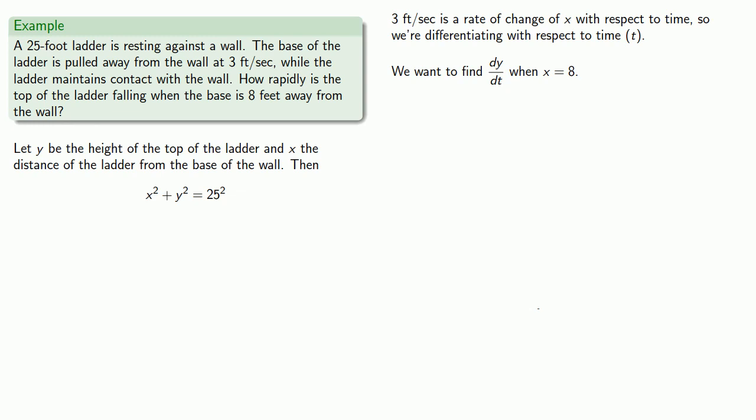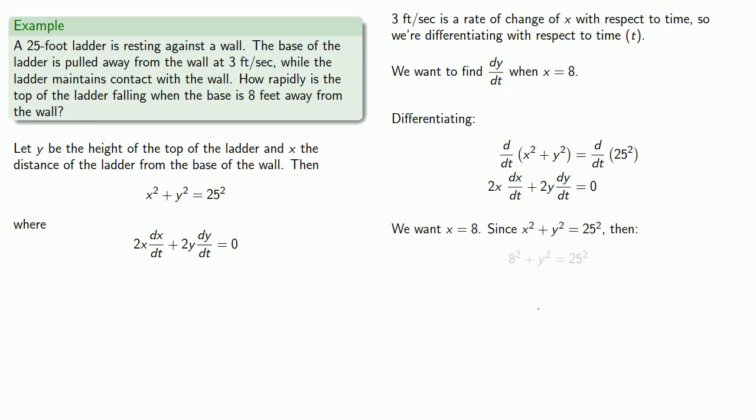So we have our relationship between x and y. So let's differentiate with respect to time. We want x equal to 8, and since x squared plus y squared equals 25 squared, then we can find y.